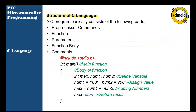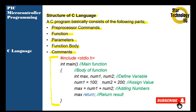Structure of a C language: a C program basically consists of the following parts — preprocessor commands, function, parameter, function body, and commands. Here you can see a C program.